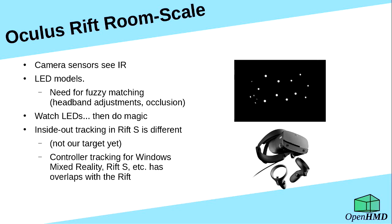The newer Rift — the Rift S and the Quest — use inside-out tracking, where cameras are placed on the headset looking outwards at the world. As you move around, they watch the scenery move and figure out your motion from that, eliminating the need for fixed cameras and some of the room calibration, while gaining a new set of problems and capabilities. It's a very different world to what I'm implementing, though some of the maths overlaps with what would be needed for Rift S support — which I'm unlikely to implement because graphics-wise it's a step backwards from the original Rift.